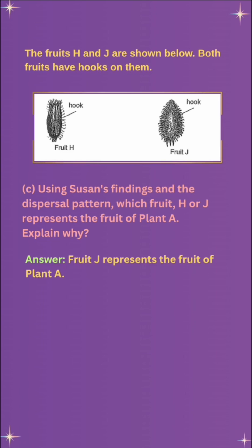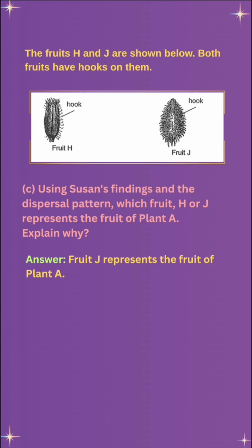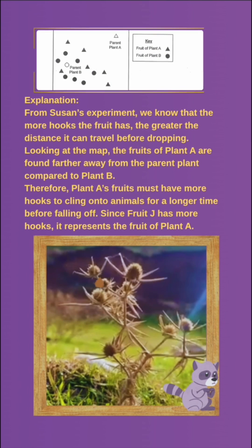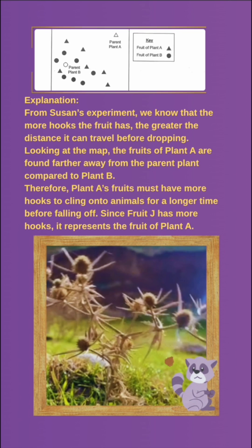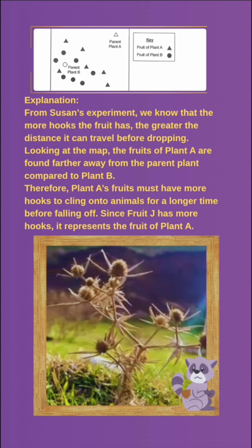Question C: Using Susan's findings and the dispersal pattern, which fruit — H or J — represents the fruit of Plant A? Explain why. Answer: Fruit J represents the fruit of Plant A.